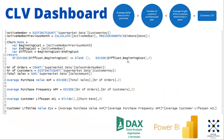Now let's see what is the formula for the Customer Lifetime Value. The formula is like this: the average value multiplied by the average frequency of the purchases, and multiplied by the length of the relationship of the customer.